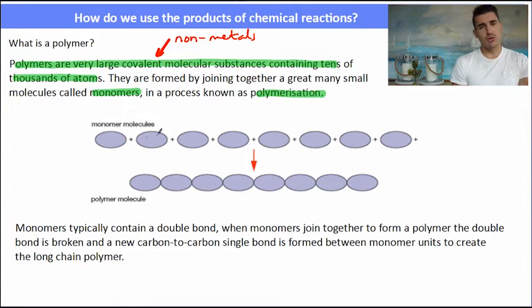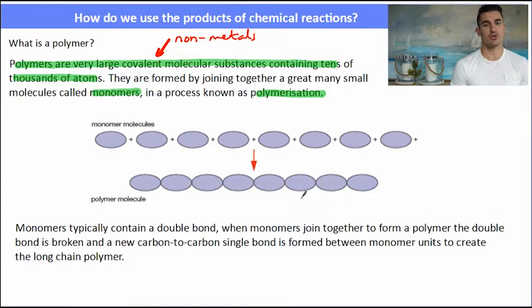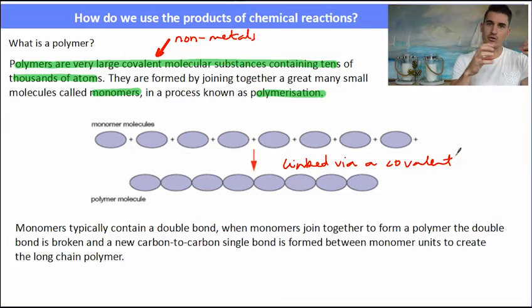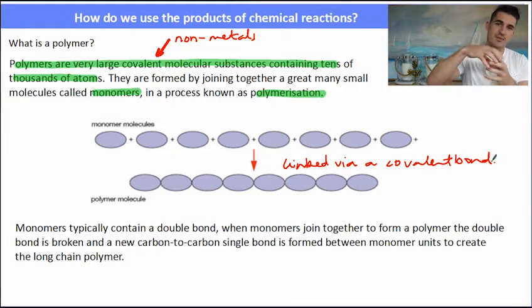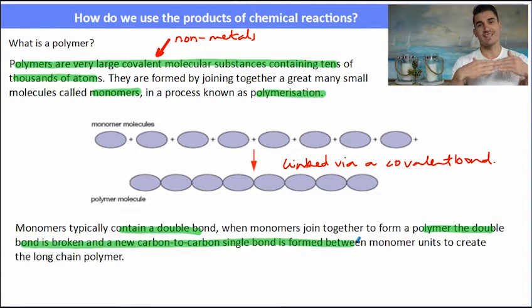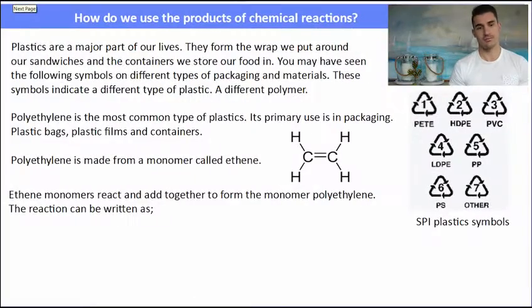A monomer is the small unit that makes up the large chain which we call a polymer, and those monomers link together via covalent bonds to form a large chain. You could think of it as a backbone of carbons with some other atoms coming off that backbone. The monomers typically contain a double bond, and when they join together to form a polymer, that double bond is broken, which allows them to join to other monomers to create the polymer.